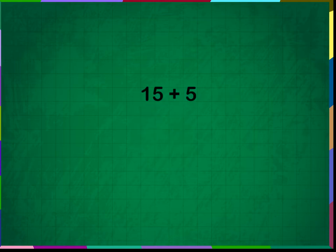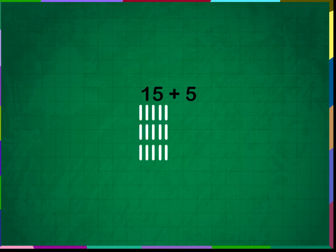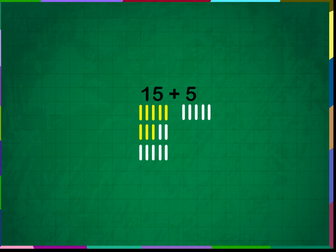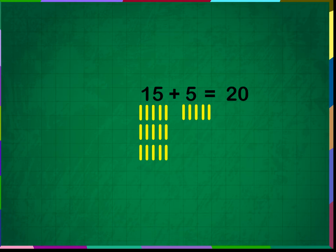Add fifteen plus five. Draw fifteen vertical lines below fifteen and five lines below five. Now count all the lines: 1, 2, 3, 4, 5, 6, 7, 8, 9, 10, 11, 12, 13, 14, 15, 16, 17, 18, 19, 20. Therefore, fifteen plus five is equal to twenty.